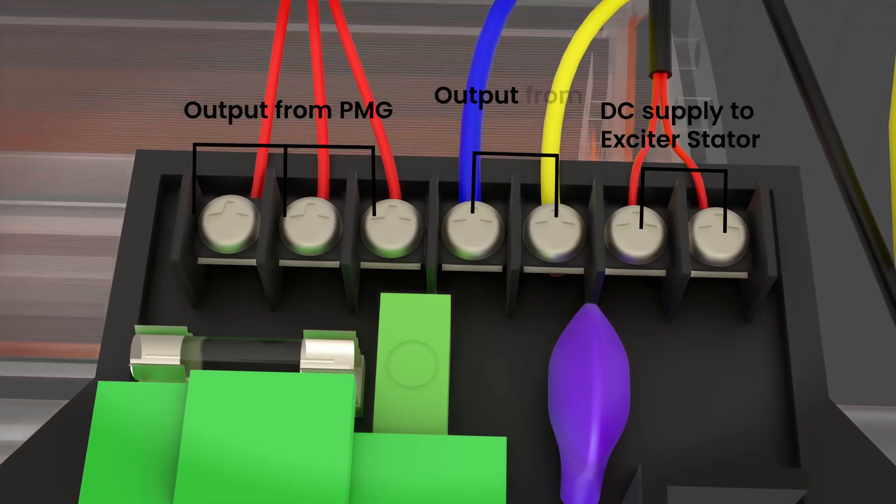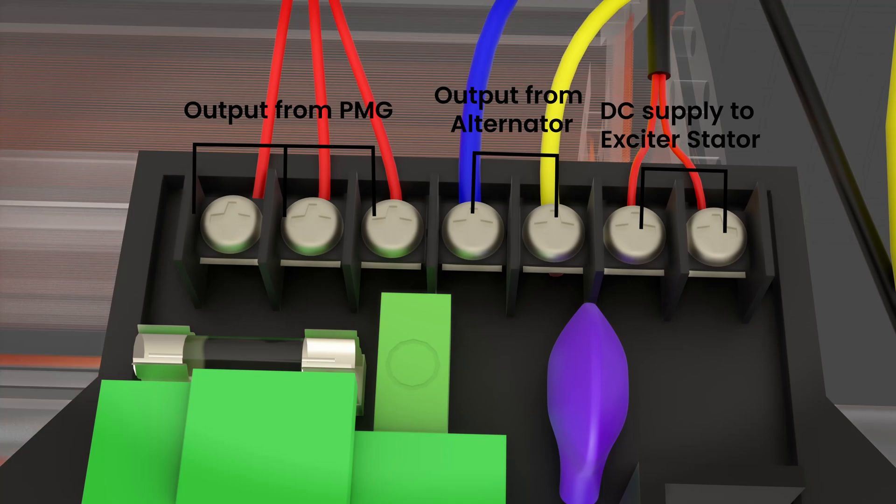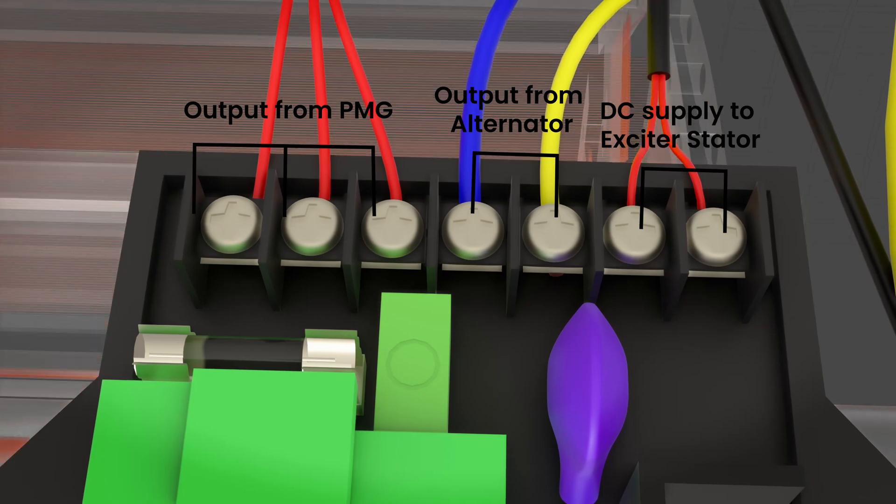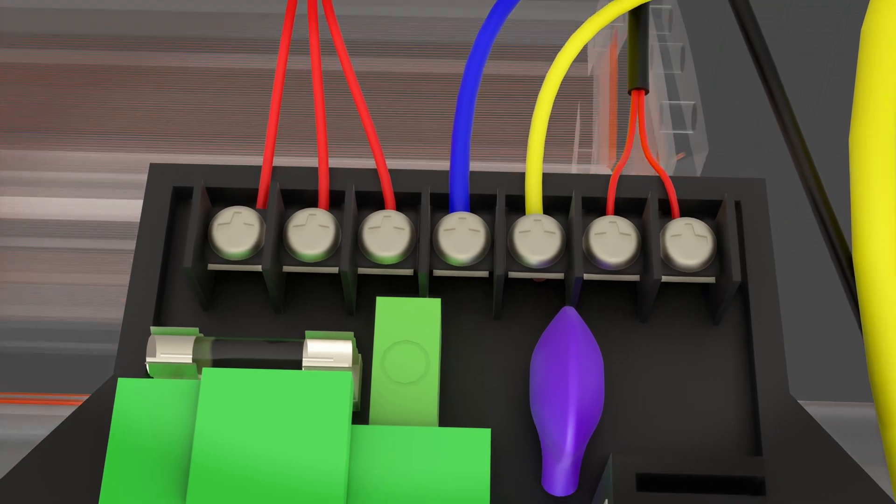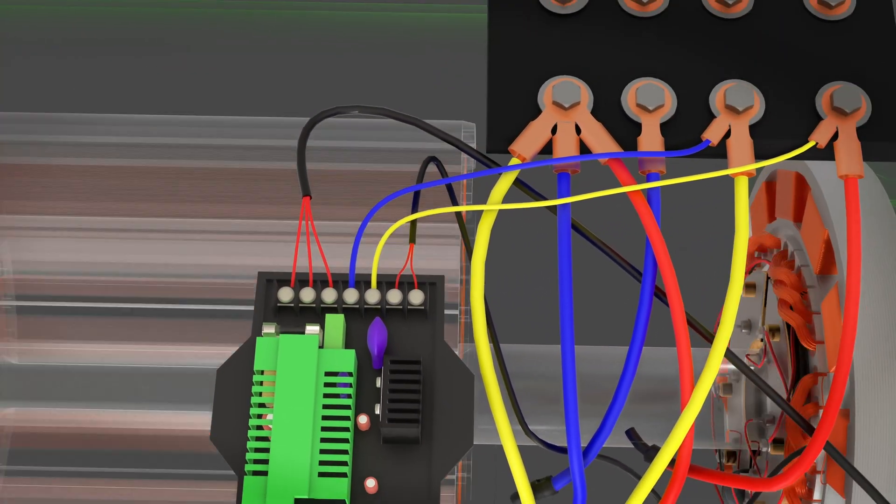Two terminals from the main alternator output are connected to the AVR for voltage sensing. The AVR continuously senses the voltage from the alternator terminals and compares it to a stable internal reference voltage.